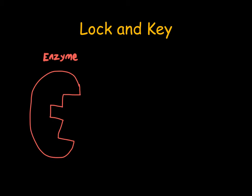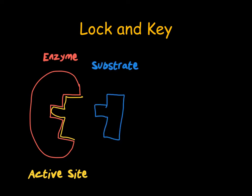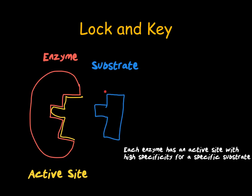In the lock and key model, we have our enzyme. Each enzyme has a specific active site, and this active site is specific to a substrate — the molecule that will react. Because the active site and the substrate are the same shape, there is high specificity between the enzyme and the substrate. For the reaction to take place, the substrate needs to bind with the enzyme in the active site, forming the enzyme-substrate complex.